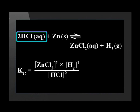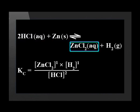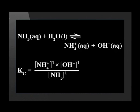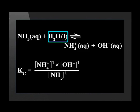Hydrogen chloride reacts with zinc to form zinc chloride. Notice that we don't put the concentration of the solid zinc into the expression for Kc. And in this example of a reaction with pure liquids, ammonia reacts with water. The water is not in gas form this time, but in liquid form.